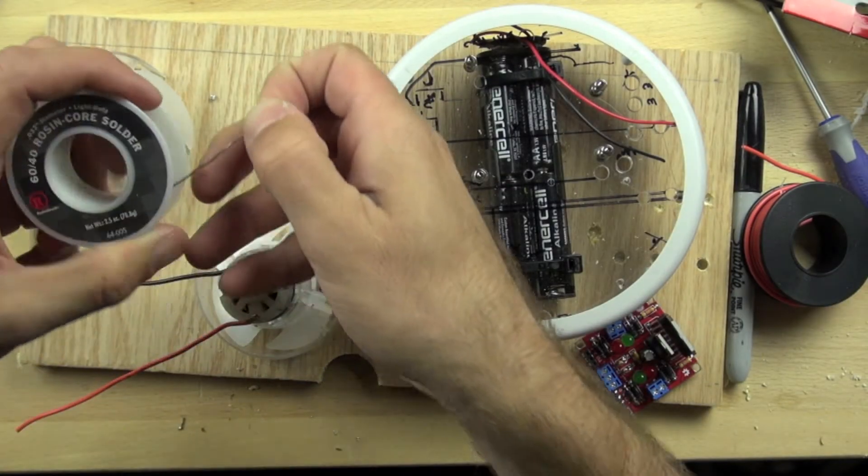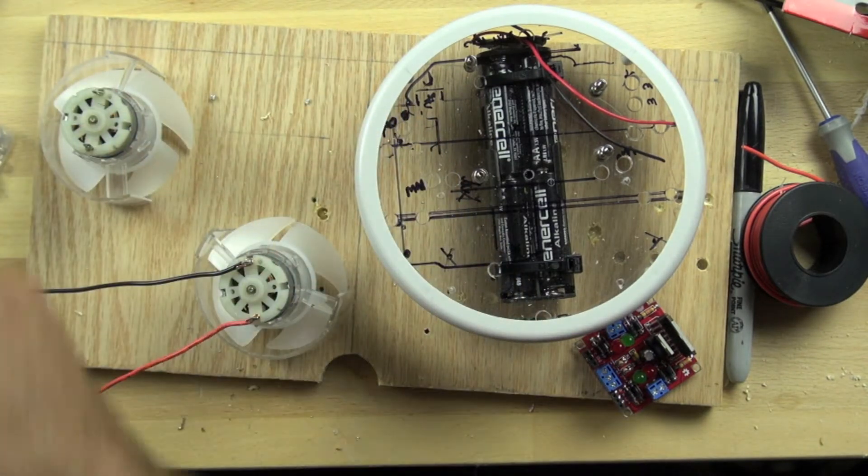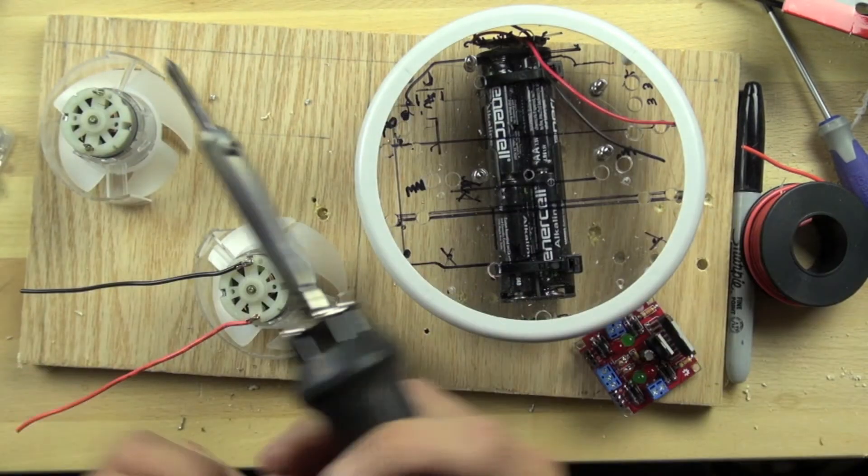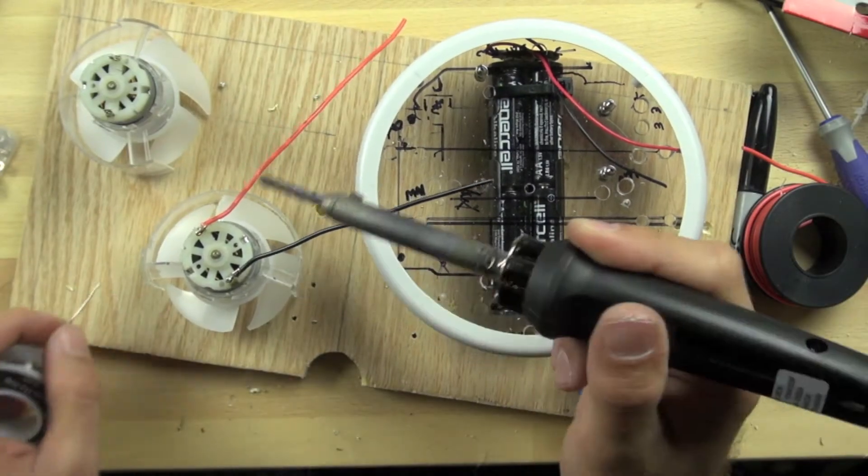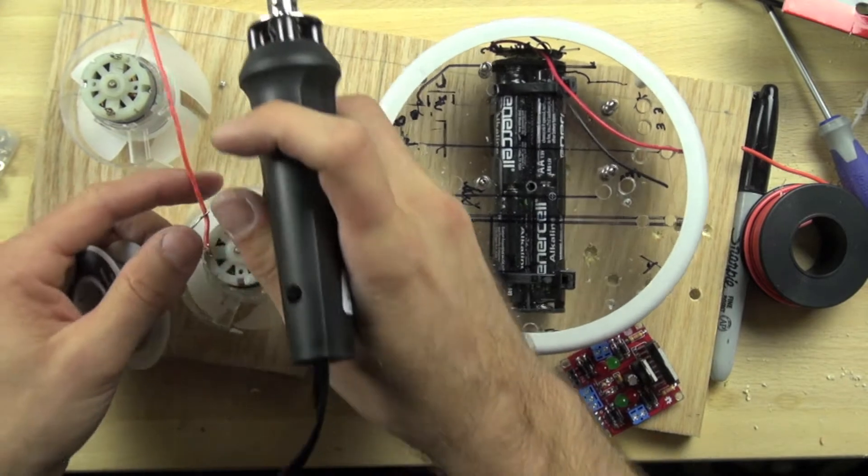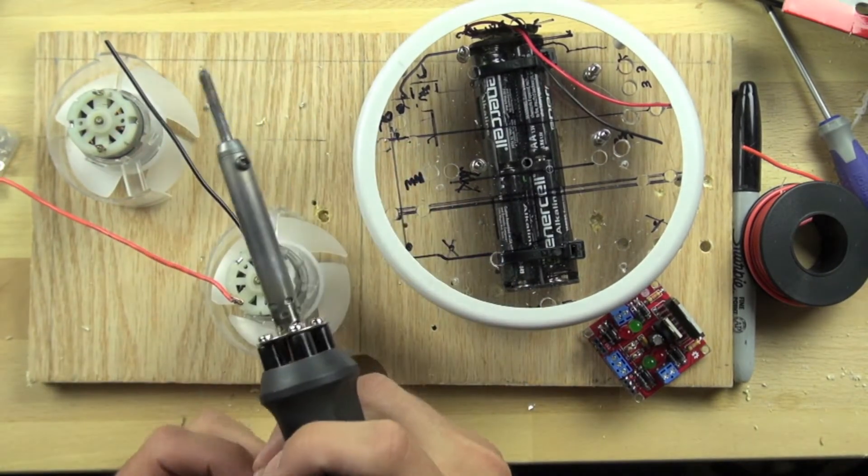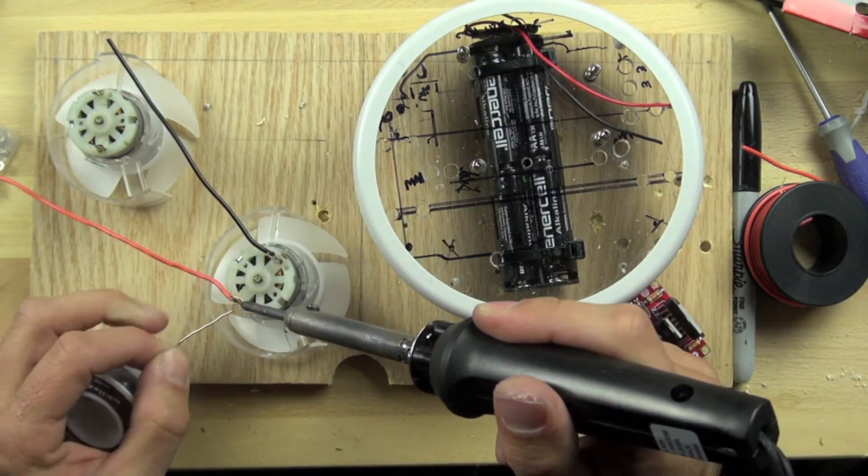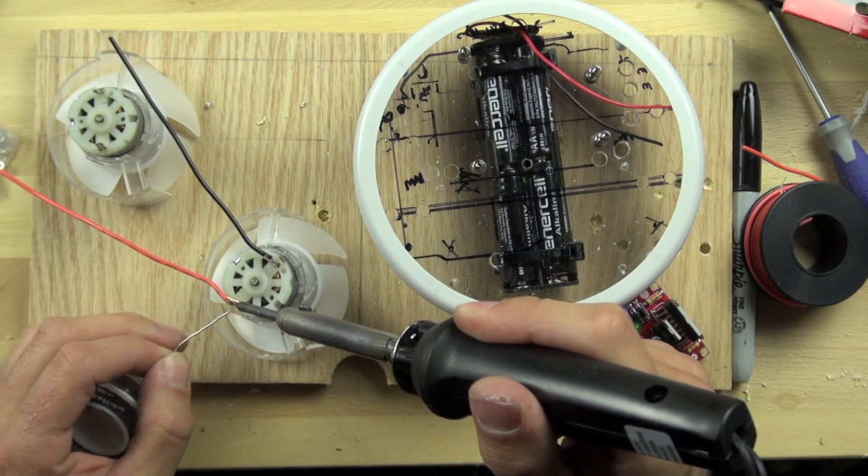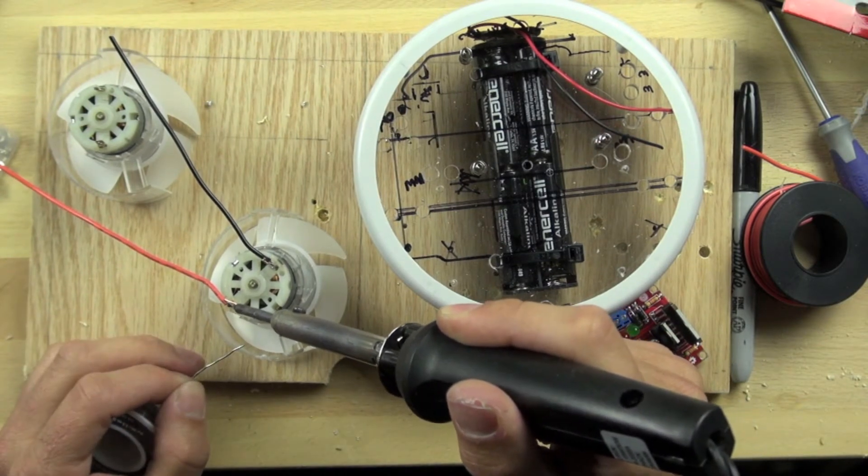Okay, so I'm using 60-40 rosin core solder, I like the rosin core because it tends to stick better. There we go, just want to make sure that the solder is completely surrounding the copper and a good way to do that is to just heat the copper and the solder will flow over it.